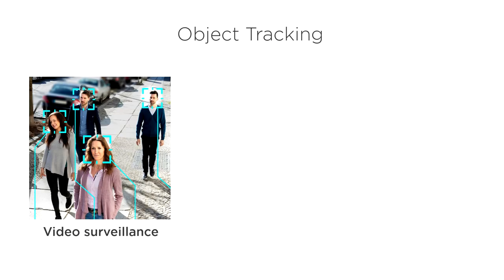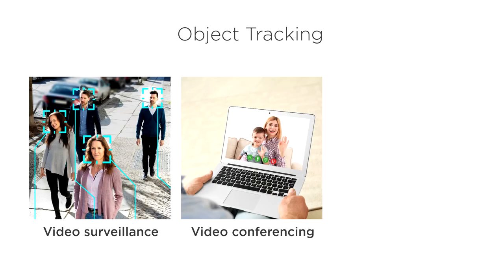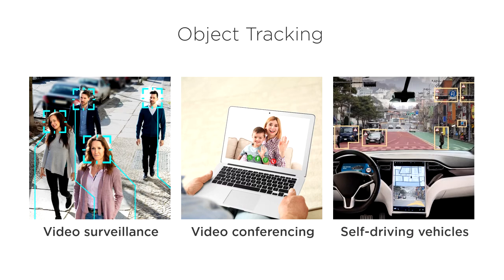Object tracking is useful anytime you need to know how an object is moving in a video over time. For example, tracking people walking in surveillance videos, following the faces of moving participants during a video call, and avoiding pedestrians in a self-driving car.